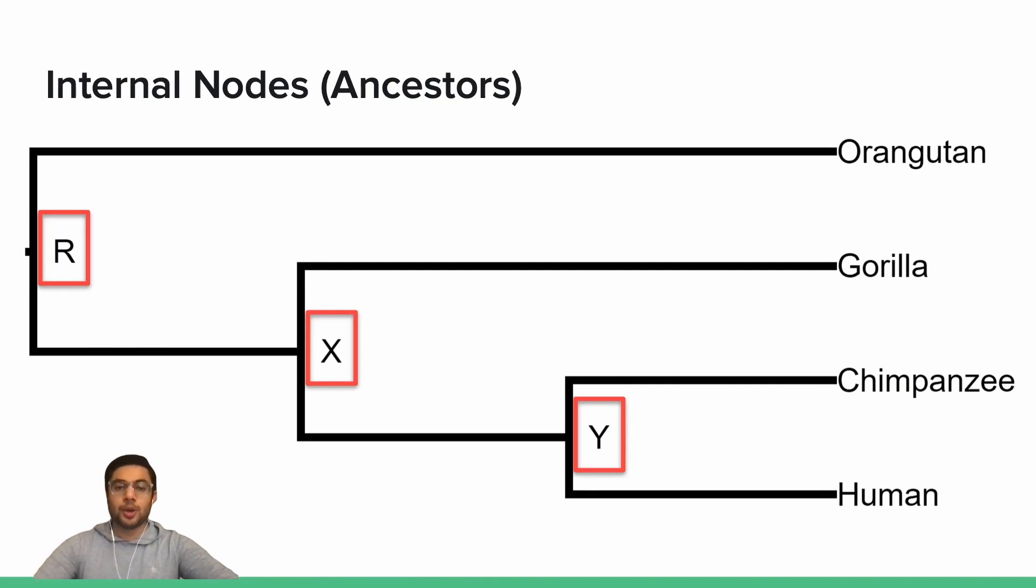The internal nodes of a typical phylogeny represent the ancestors of the leaves, and we typically assume these ancestors are extinct. The internal nodes in this phylogeny are R, X, and Y.